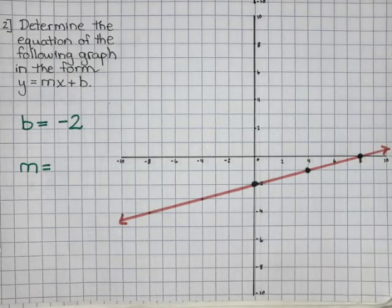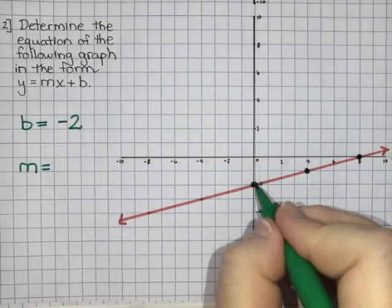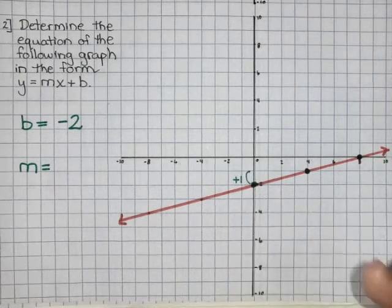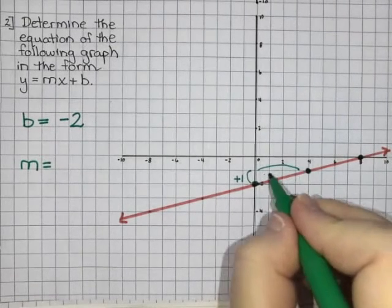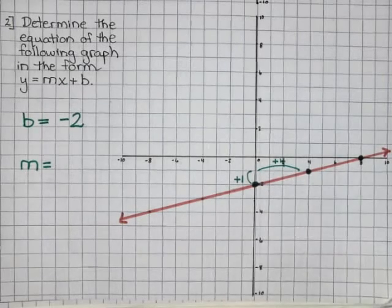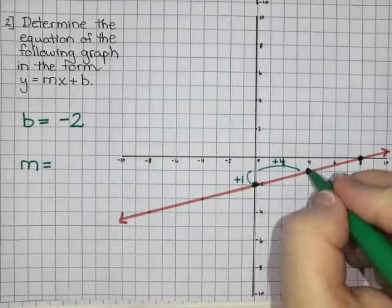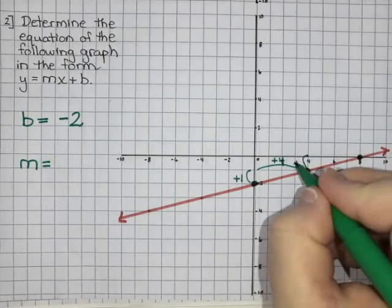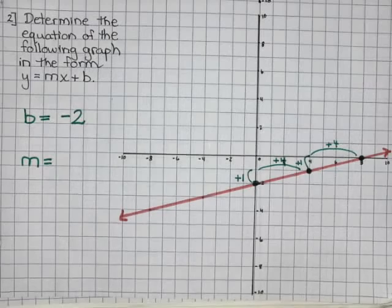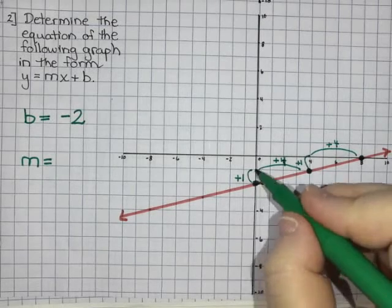I notice to get from this point to this point, I went up one and one, two, three, four squares over, so I went over four. I'm going to check to make sure it's the same for the next one. We went up one and over four. We always do the up and down part first.